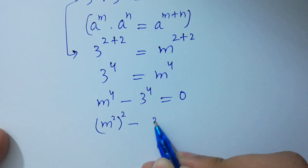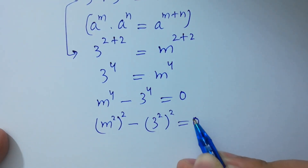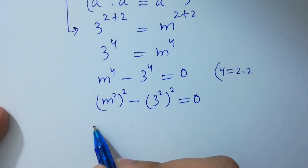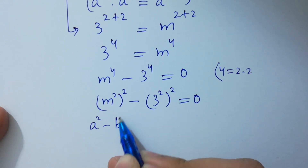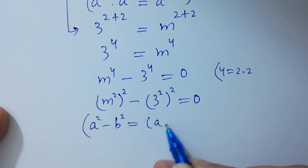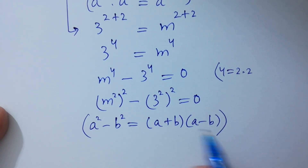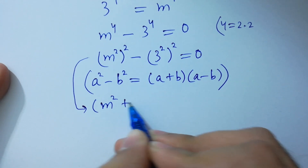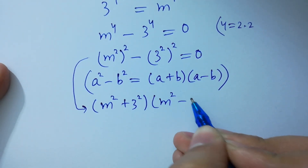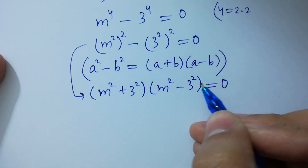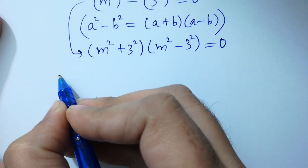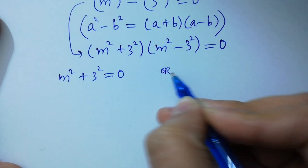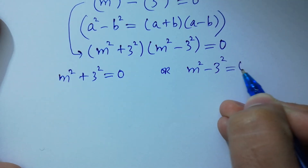Since 4 equals 2 times 2, we write this as m squared squared minus 3 squared squared equals 0. Using the formula a squared minus b squared equals (a plus b)(a minus b), we get (m squared plus 3 squared)(m squared minus 3 squared) equals 0.